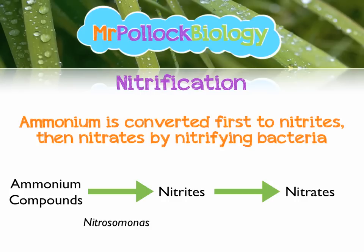The two bacteria I'd like to identify are: nitrosomonas, which oxidises ammonium to nitrites, and nitrobacter, which oxidises nitrites to nitrates. Because these bacteria require aerobic conditions, it's crucial that the soil has good structure and that the land — especially for growing crops — is managed effectively with good drainage and air spaces. You don't want ammonium compounds building up, as things just don't grow that well.